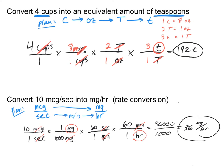To recap, conversion factors require awareness of where each unit is — numerator or denominator — so you place it correctly to cancel. Multiplying by 60 seconds per 1 minute makes sense intuitively: if 10 micrograms go in every 60 seconds, multiplying by 60 gives the total number in 1 minute, similar to what we saw with unit ratios in the previous video. Practice a few examples, and be sure to reach out on the questions and answers board if you have questions. Thank you.